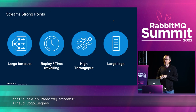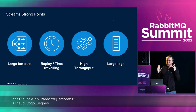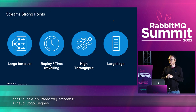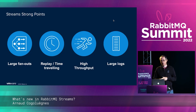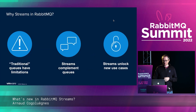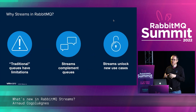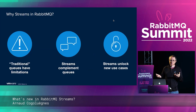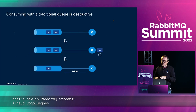What are streams good for? Large fanouts — when you have a bunch of applications wanting to read the same messages but do different processing. If you want to go back in time and replay, you can read and re-read your streams. With the stream protocol we have significantly higher throughput than with regular queues. For large logs, streams are persistent and replicated, so they don't store much in memory and can just keep growing, whereas with a queue you want it to be mostly empty. So streams complement queues and unlock new use cases with RabbitMQ.